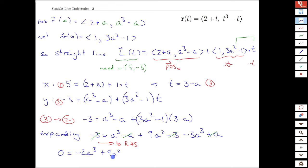And so that's it. -2a³ + 9a². Well, we can factor that quite nicely as a²(-2a+9). And so this gives us a=0 or -2a+9 equals zero, which is the same as a=9/2.